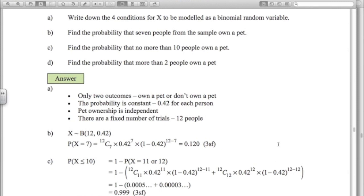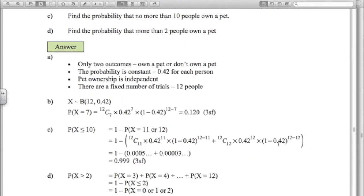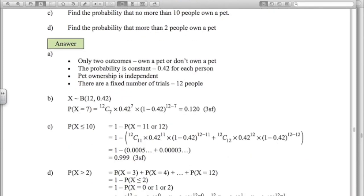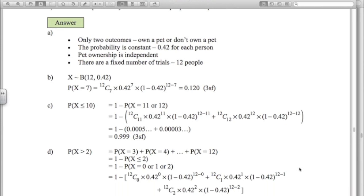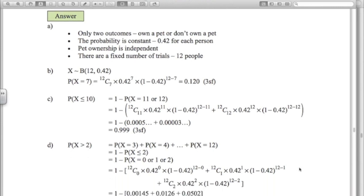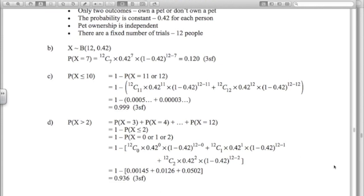And the last one, more than two people. More than two. Once again, you could say 3, 4, 5, 6, 7, 8, 9, 10, 11, 12. Much easier to say 1 minus less than or equal to 2. So 1 minus 0, 1, or 2. So there you have to use the formula three times. And that's reasonable. They may ask you to do that in the exam. There's the working. Carefully putting all the numbers in. 0.936 is the answer.